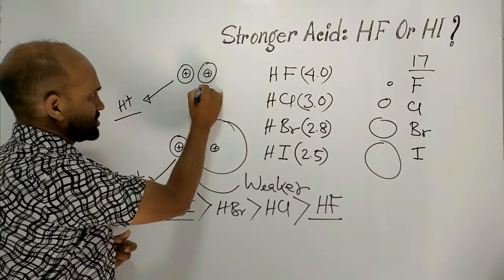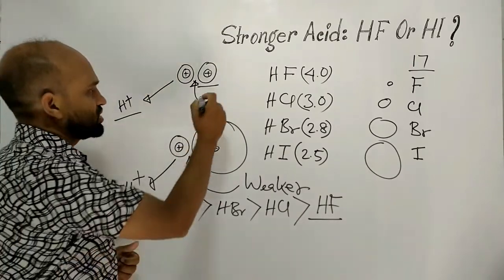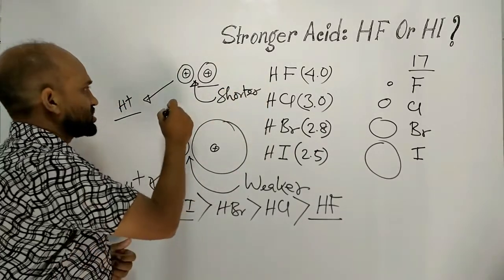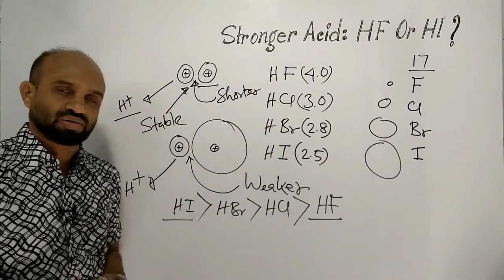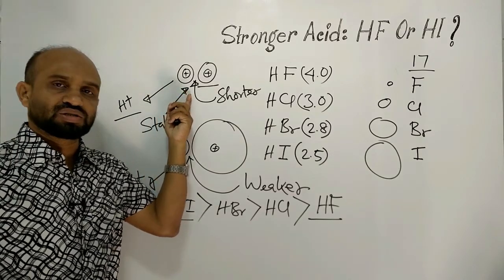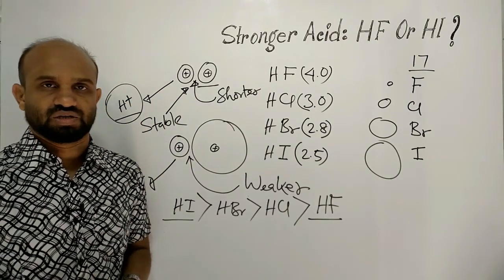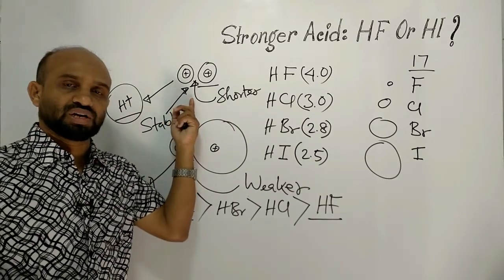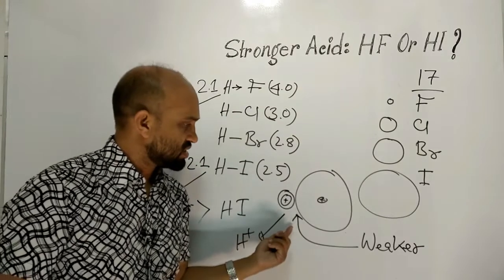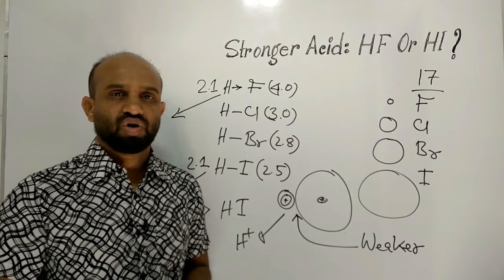In the case of hydrofluoric acid, fluorine is smaller in size, that is why the bond between hydrogen and fluorine is a shorter bond. Shorter bonds are stable bonds, so this bond doesn't break easily, and ultimately a proton is not formed easily. So hydrofluoric acid is a weaker acid compared to hydroiodic acid. This means that the bigger size of the atom plays a dominating role over electronegativity difference. This is all about the strength of hydrohalic acids.